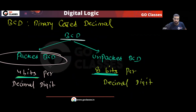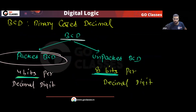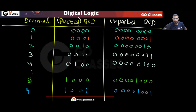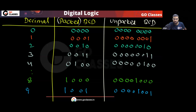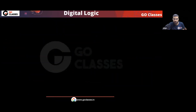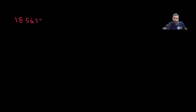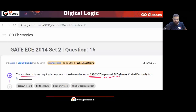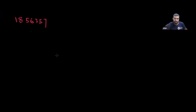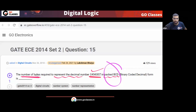So to summarize: there are two types of BCD — packed BCD (4 bits per decimal digit) and unpacked BCD (8 bits per decimal digit). Now let's solve the question. The decimal number given is 1856357. The question asks: how many bytes are required to represent this number in packed BCD?